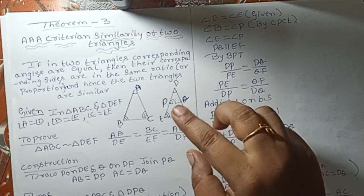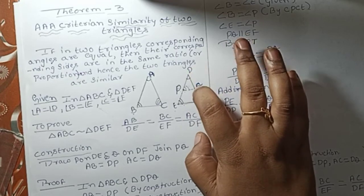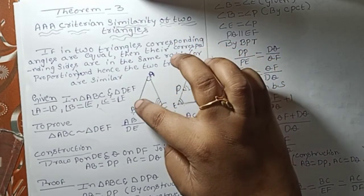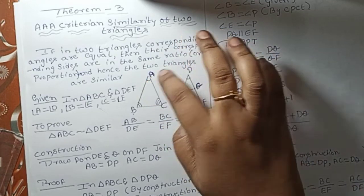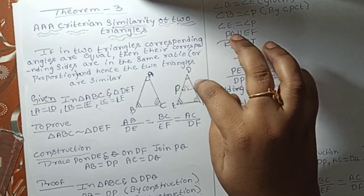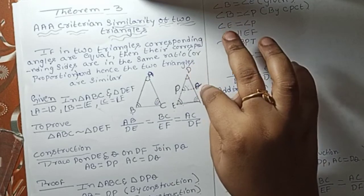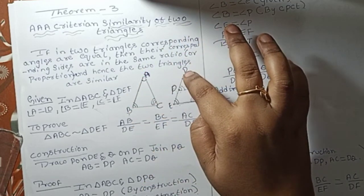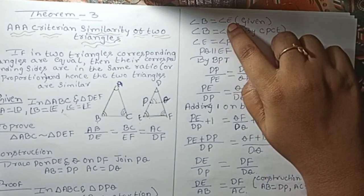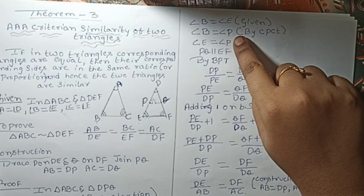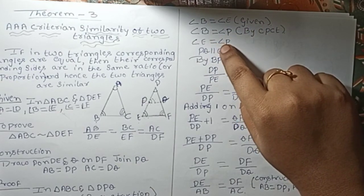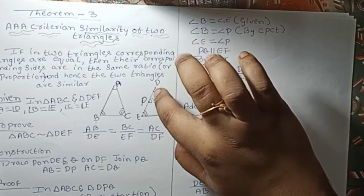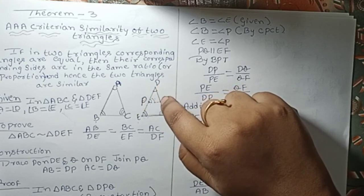This is the AAA criterion for similarity of two triangles. In summary: DE divided by AB equals BC divided by EF equals AC divided by DF. Construction involved taking P on DE and Q on DF. In the proof, triangle ABC is congruent to triangle DPQ, angle B equals angle P, and PQ is parallel to EF. By the Basic Proportionality Theorem, DP divided by PE equals DQ divided by QF.